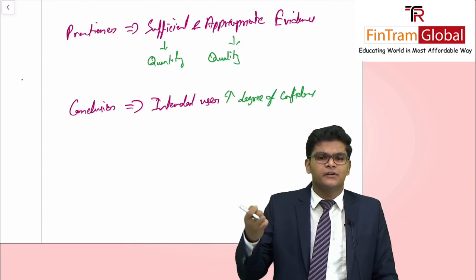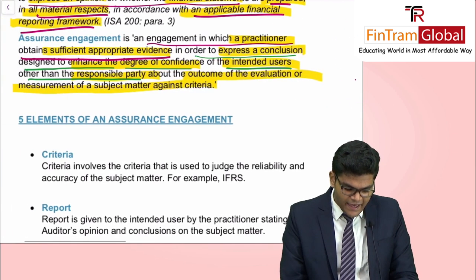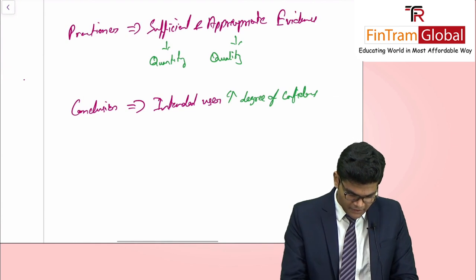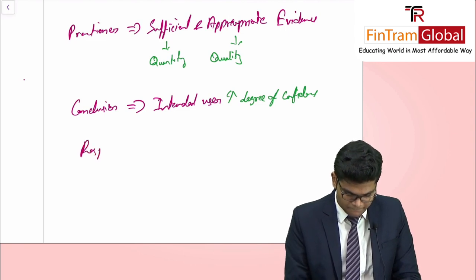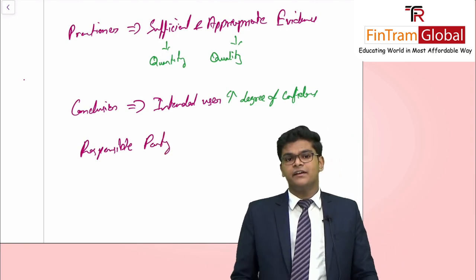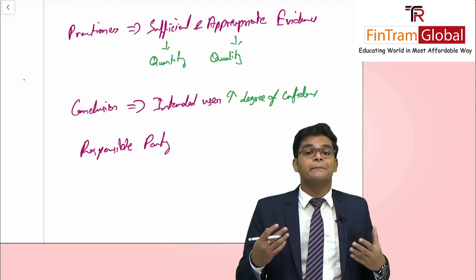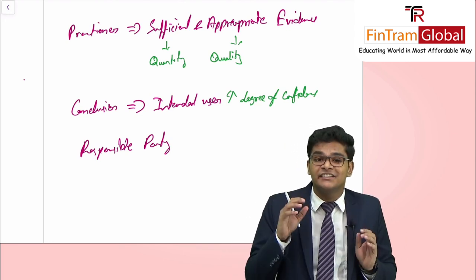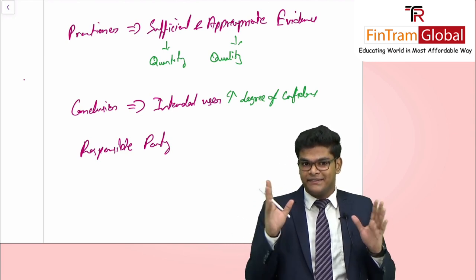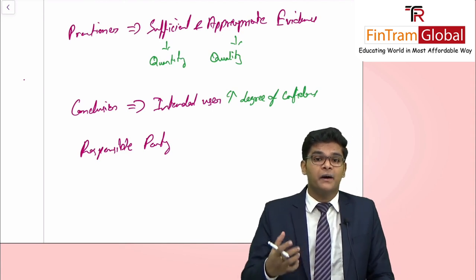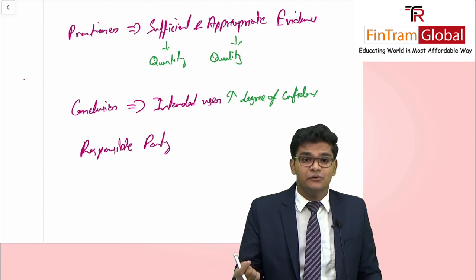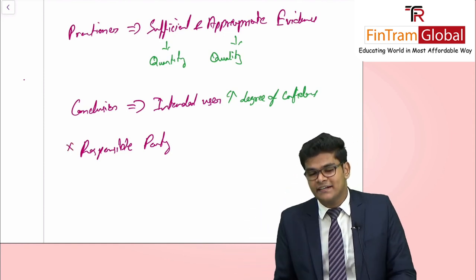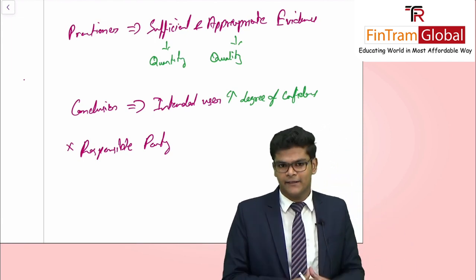Next to 'intended users' in the definition are the words 'other than the responsible party.' In the case of an audit, the responsible party is basically the management of the organization — the people who are responsible for preparing the financial statements. We provide the conclusion primarily for the intended users and not the responsible party.